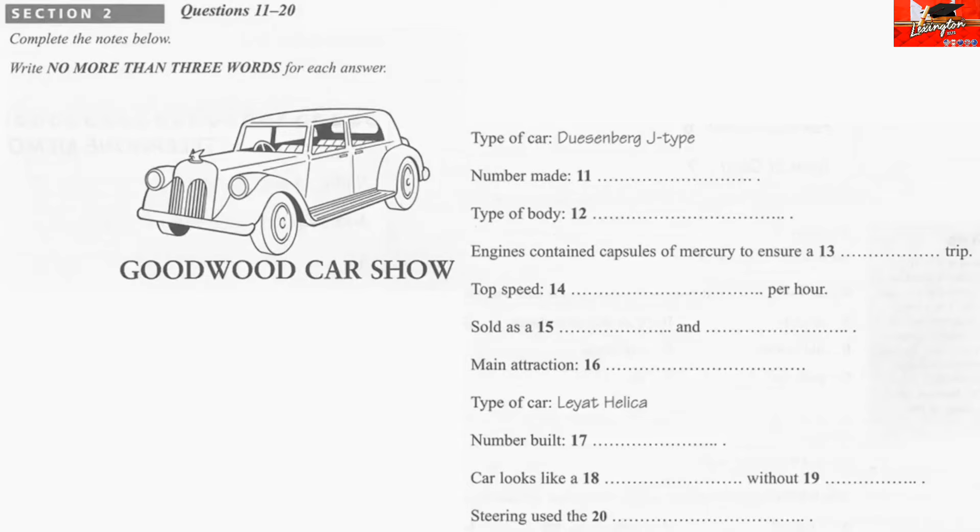As the talk continues, answer questions 17 to 20. On to another celebrity, the 1922 Lea Helica. Only 30 of these French propeller cars were built and the model here at Goodwood, which was the fourth to be made, is thought to be the only surviving example still capable of running. The brains behind this car was Marcel Lea, who was an aviation pioneer first and foremost and the influence of flying is quite apparent in the car. The Lea very strongly resembles a light aircraft with its front propeller but in this case, it's minus any wings of course.